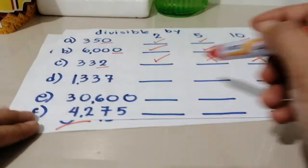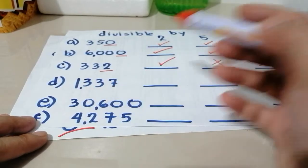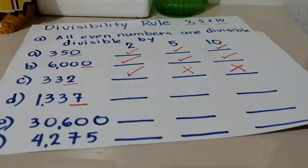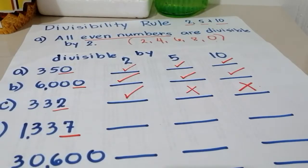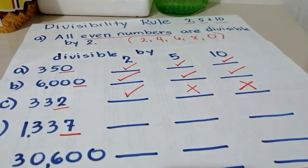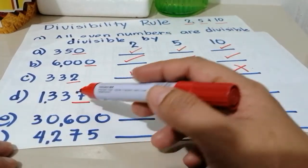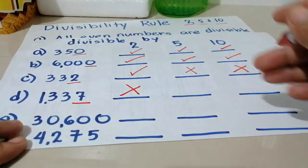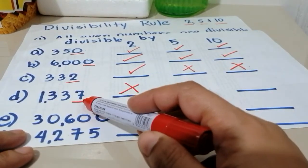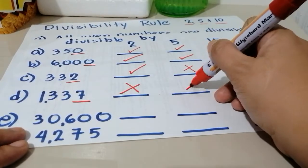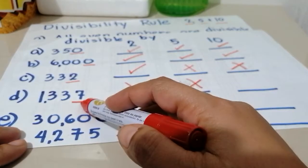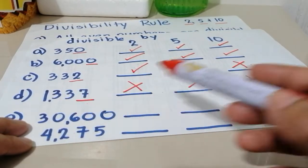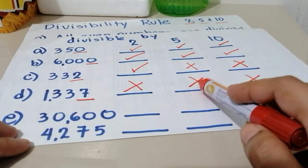Next — 1,337. What's the ones digit here? The ones digit is 7. And 7 is not an even number; 7 is an odd number. Because even numbers only end with 2, 4, 6, 8, and 0, and 7 is not one of them. Therefore, 7 ay hindi even number. At dahil hindi siya even number, hindi siya divisible by 2. At dahil hindi rin siya nag-i-end sa 0 or 5, hindi rin siya divisible by 5. At dahil hindi rin siya 0, hindi rin siya divisible by 10. So 1,337 is not divisible by 2, 5, and 10.